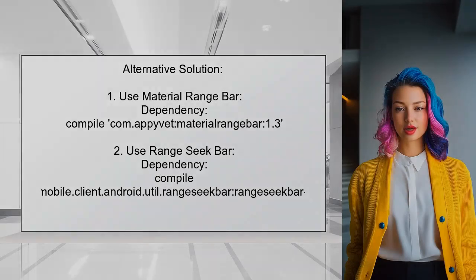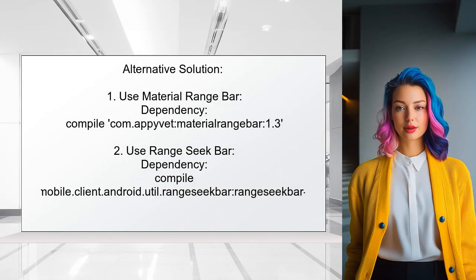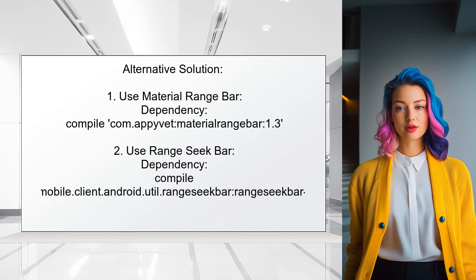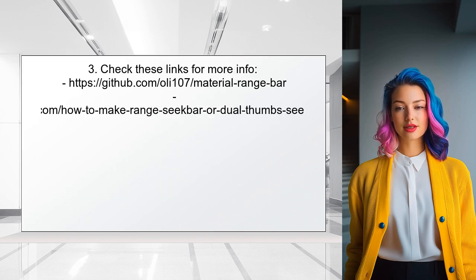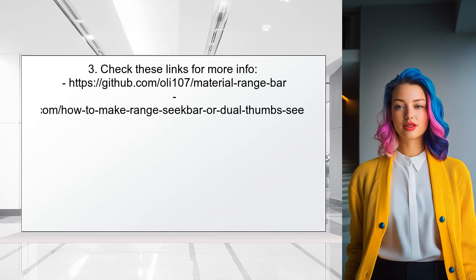An alternative solution, provided by another user, suggests using two libraries for your rating bar-like selection. The first is called Material Range Bar, which you can include in your project with a simple dependency. The second option is the Range Seek Bar library, also available through a dependency. They recommend checking out the provided links for more details, noting that while these may not be a perfect fit, some customization could make them work for your needs.